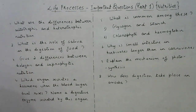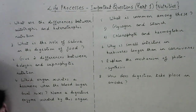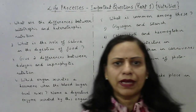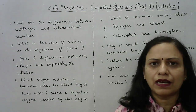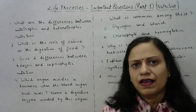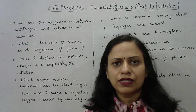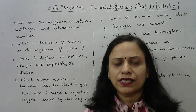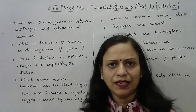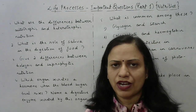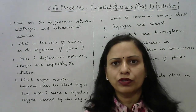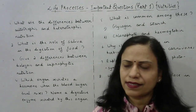The second question is: what is the role of saliva in the digestion of food? Saliva is secreted by the salivary glands present in our mouth. Saliva has two functions — basically it moistens the food so that it can be chewed easily, and second, it contains an enzyme called salivary amylase. You have to explain both functions in detail for this answer.